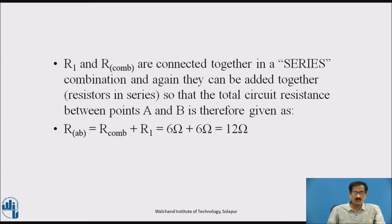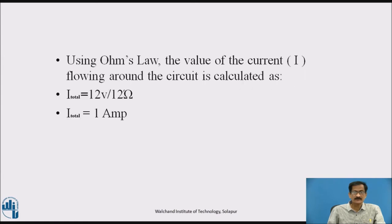R1 and R_combination are in series, so the total circuit resistance RAB equals R_combination plus R1 equals 6 ohm plus 6 ohm equals 12 ohm. Using Ohm's law, the total current is I_total equals 12 volts divided by 12 ohm, so total current comes out to be 1 ampere.